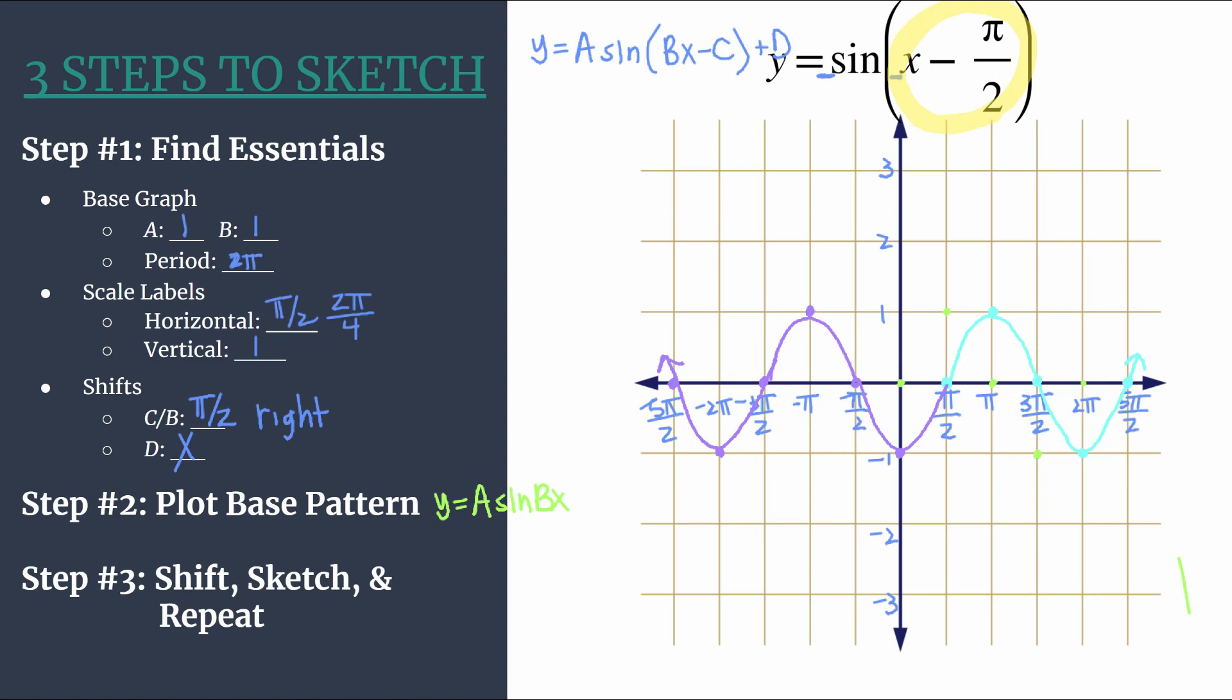So we have two and a half cycles of this graph: y equals sine of x minus pi over two. One thing to notice is we said B is going to tell us how many cycles happen between zero and two pi. This is different than how we graphed but it's still just one complete cycle. It's counting from minimum to minimum. So we see one cycle of our graph happening.